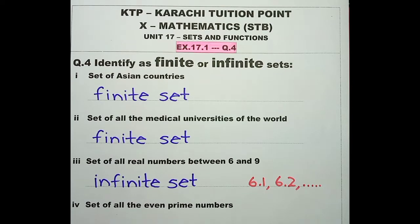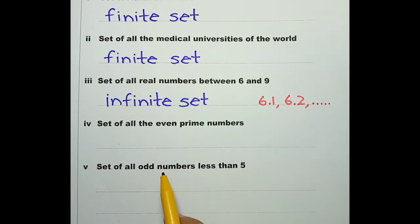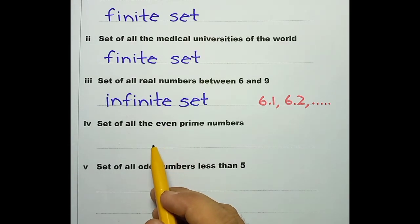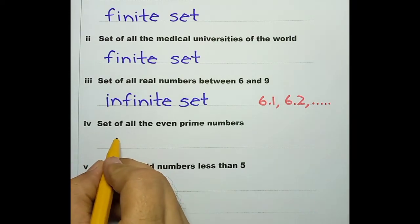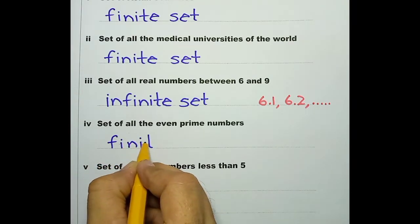Number 4: set of all the even prime numbers. Dear friends, we need numbers which are even as well as prime. Now, 2 is the only number which is even as well as prime. So this is a finite set.